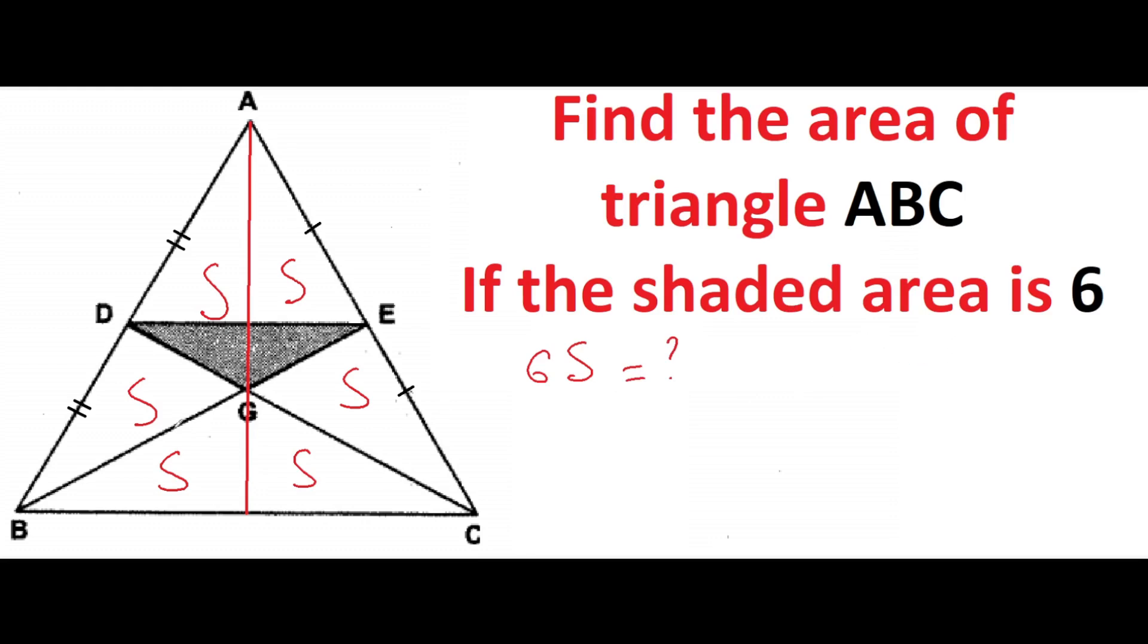For the start, we know that the area of quadrilateral ADGE will be 2S. And if we subtract from these 2S the shaded area, we can get the area of triangle ADE.